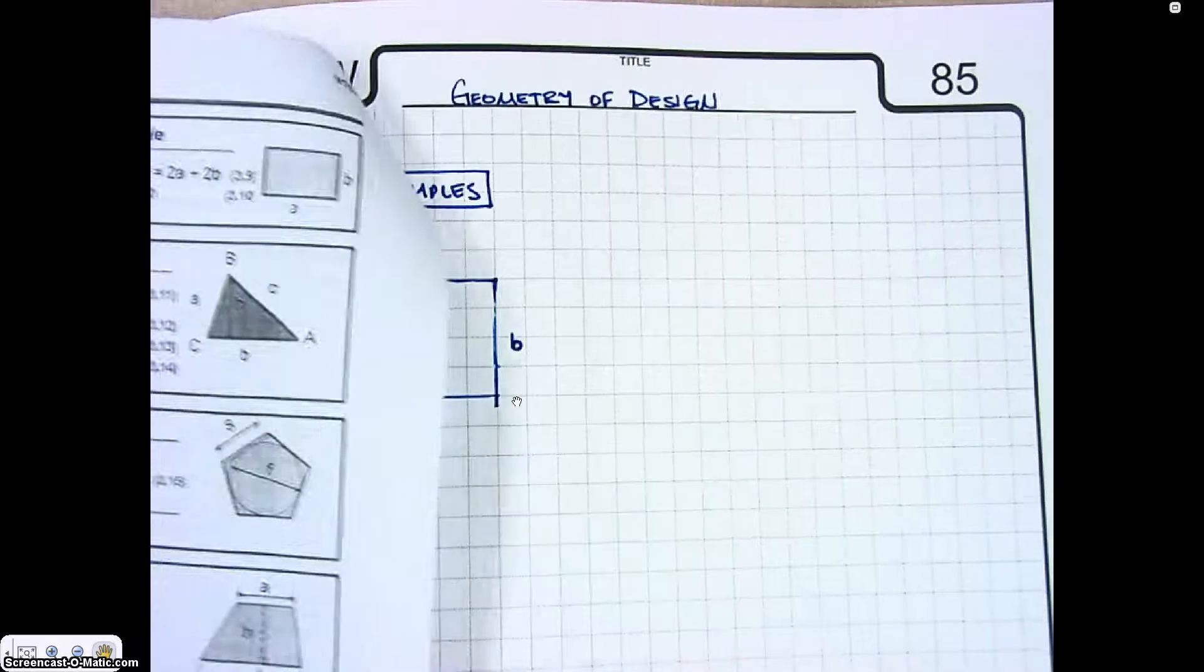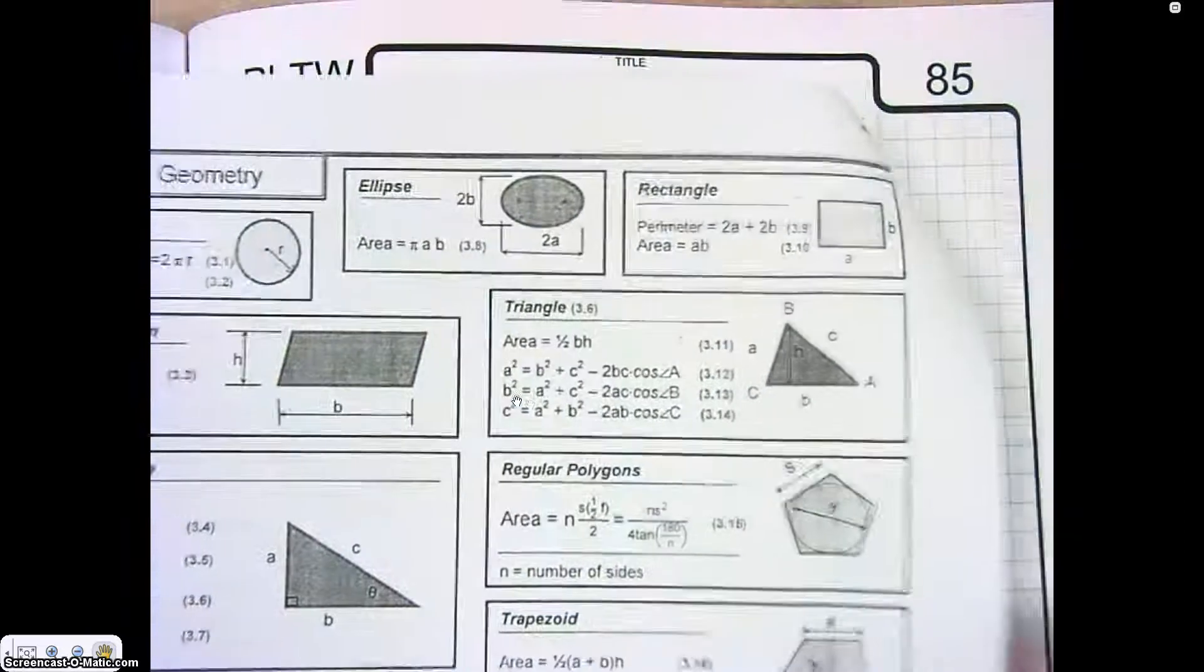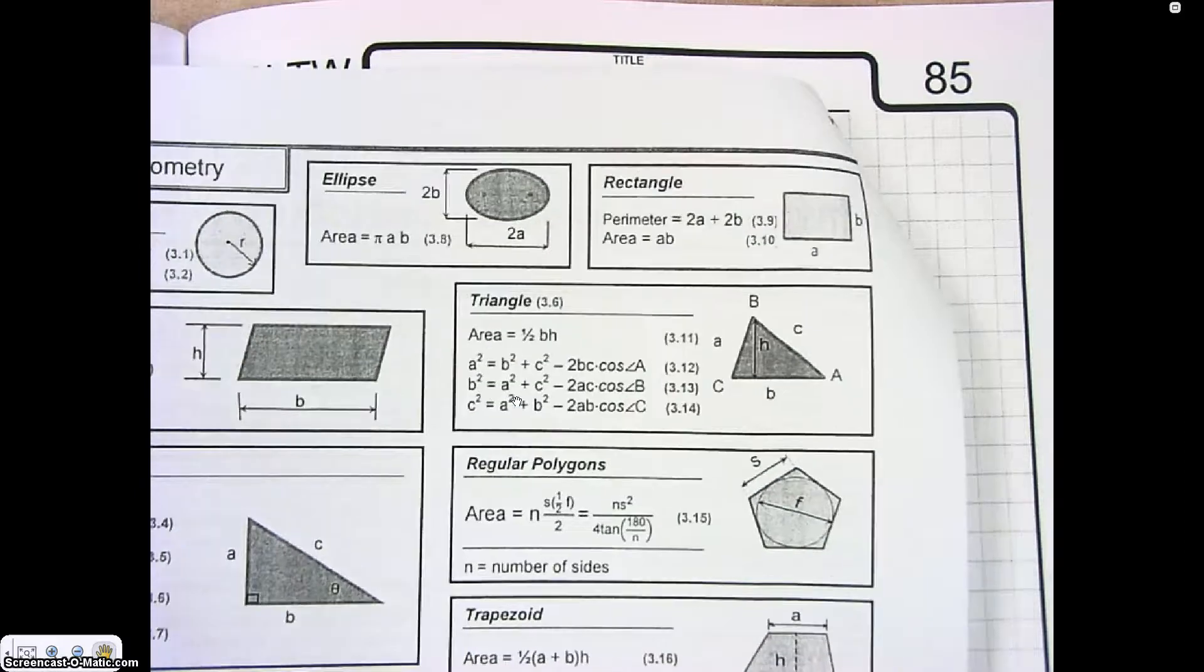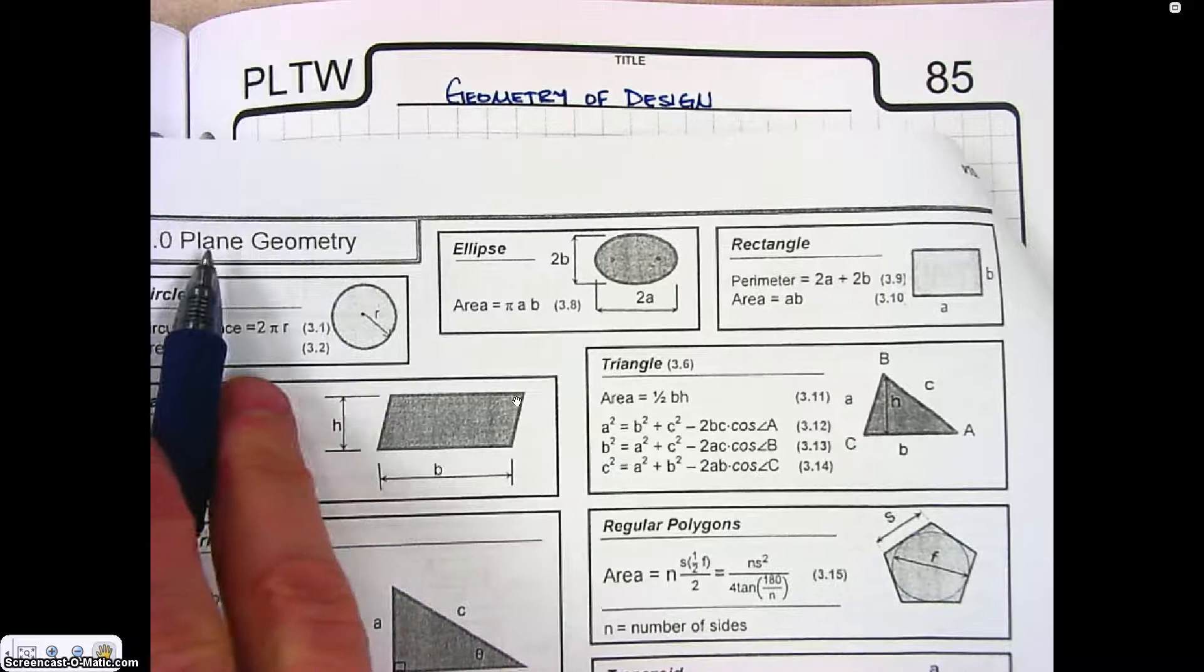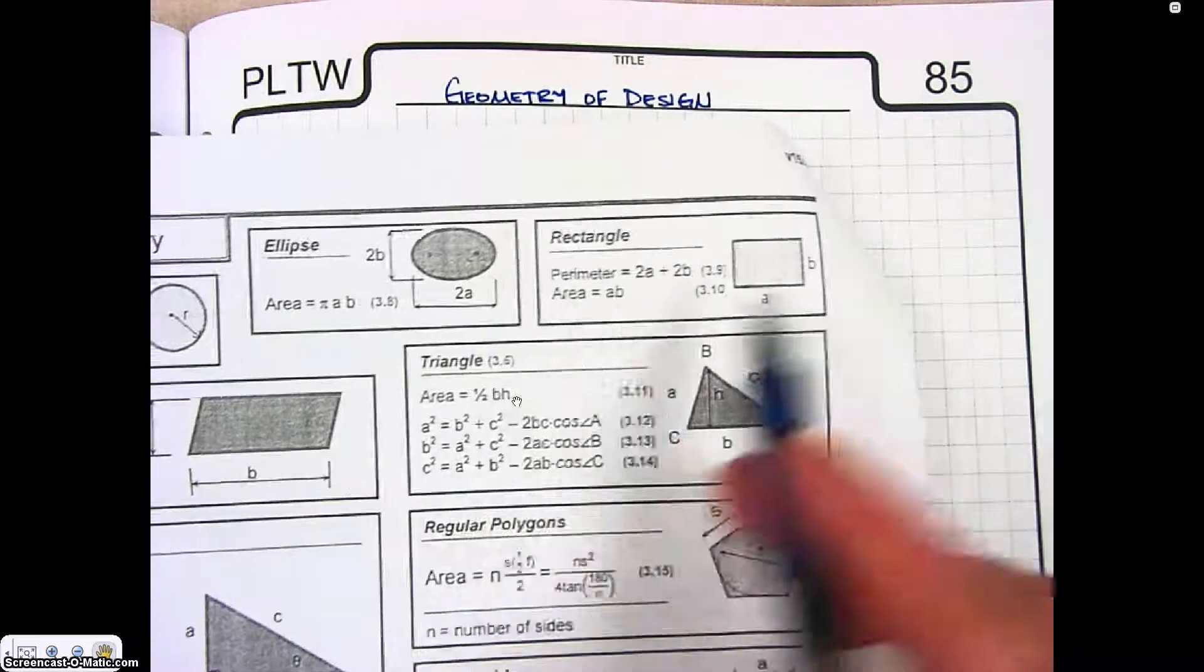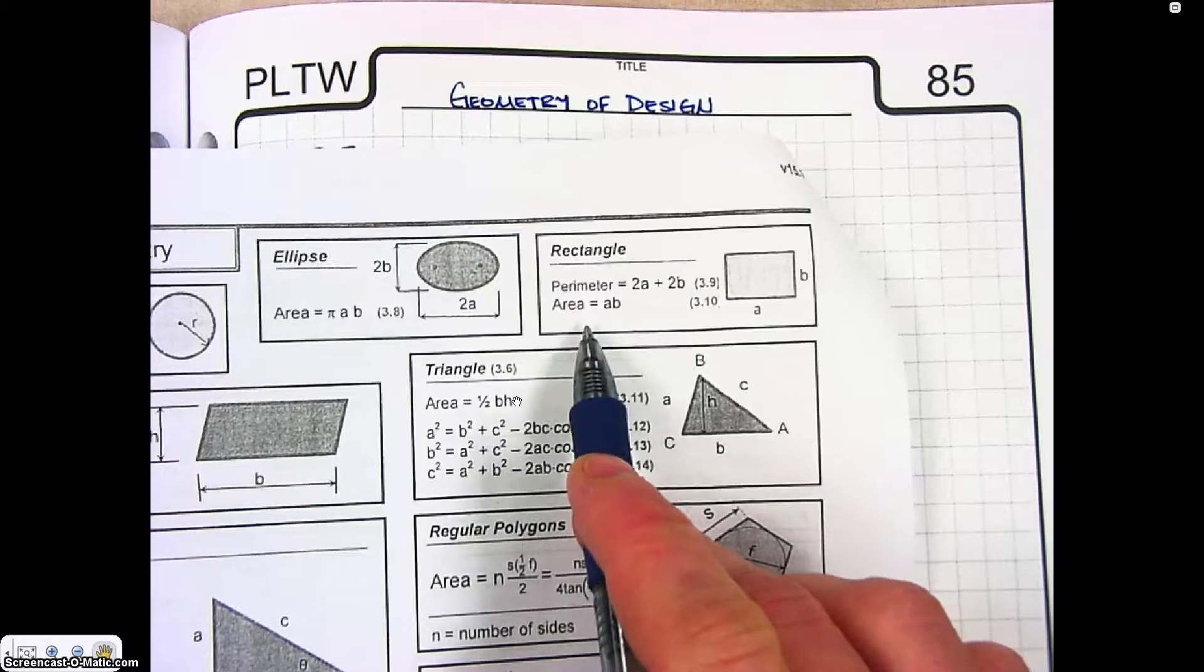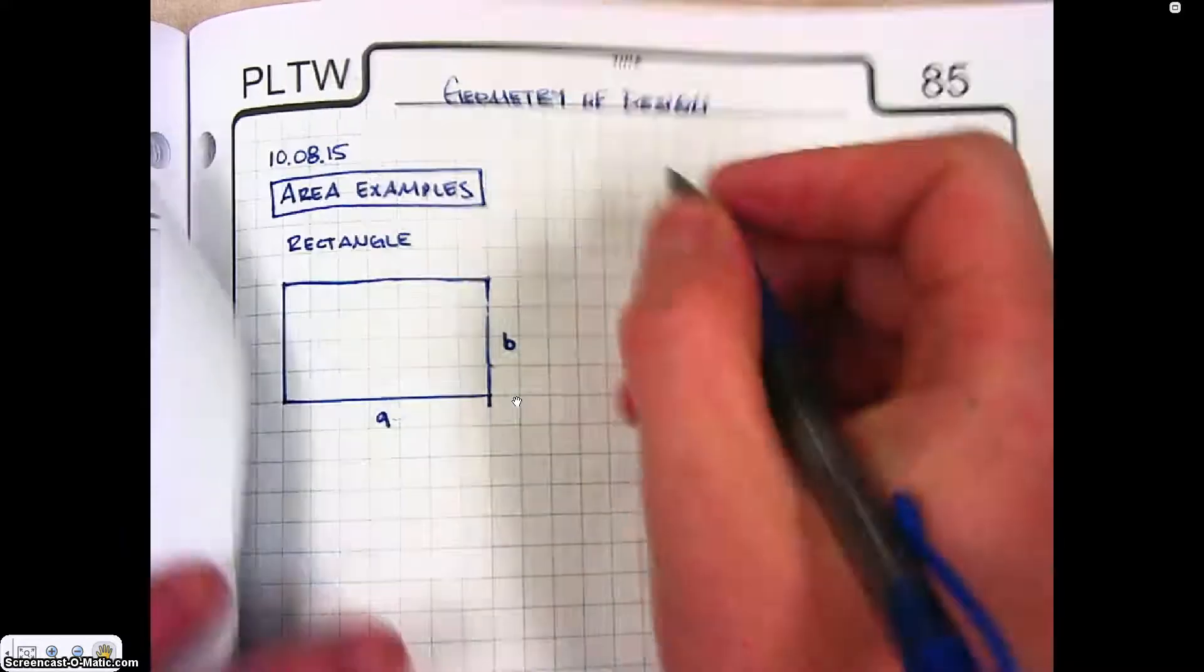We can then look at our formula sheet on the second page. It has all of the formulas for calculating the descriptions for plane geometry. One of them is area. So here's the formula for rectangle. Area is equal to A times B.